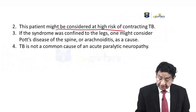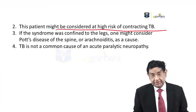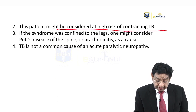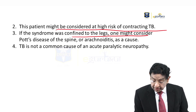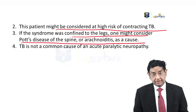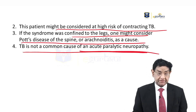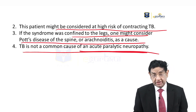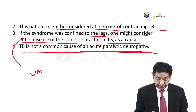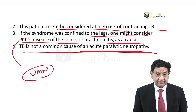This patient might be at risk of contracting tuberculosis because he is an HIV patient, and tuberculosis is very common in HIV patients. If the syndrome was confined to the legs, one might consider Pott's disease of the spine or arachnoiditis as a cause. However, TB is not a common cause of acute paralytic neuropathy as described here. If it were due to Pott's spine, there would have been upper motor neuron features in the legs, but in this patient we have flaccid paralysis, so TB is not the answer.